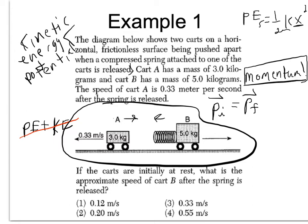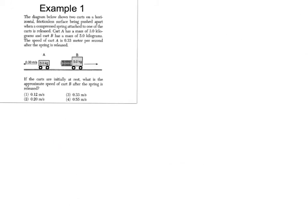Alright, so now let's actually do this problem. Okay, so the problem says if the two cars are initially at rest, what is the approximate speed of cart B after the spring is released? Well, my mind notices really quickly, keep forgetting to click the pen, my mind notices really quickly that these two cars are at rest initially.